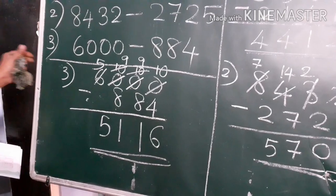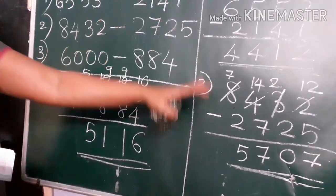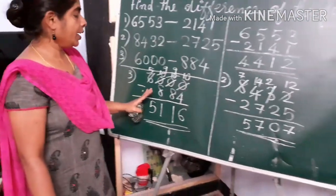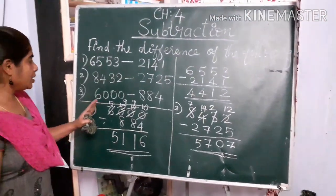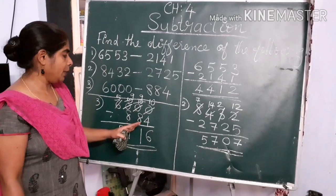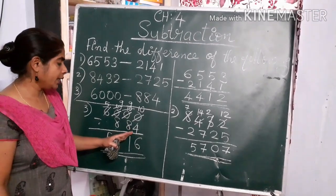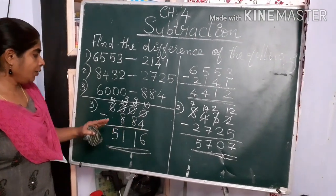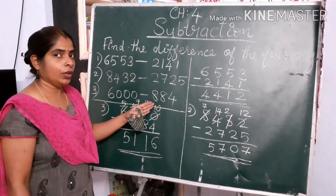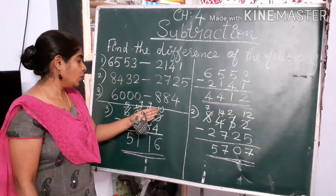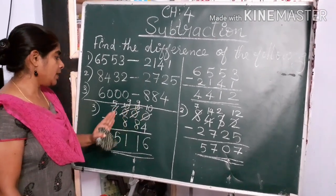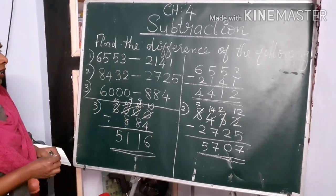These 3 types of questions — 3 different types, including the borrowing type — be careful. The first number should always be bigger than the second number. If it is not like that, we will borrow from the nearest place. We can borrow from the nearest place only.